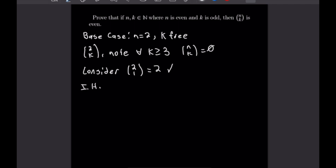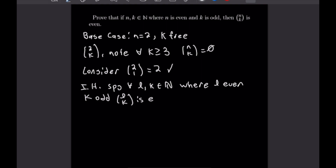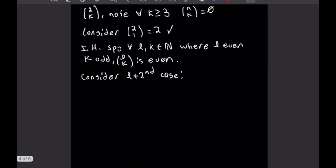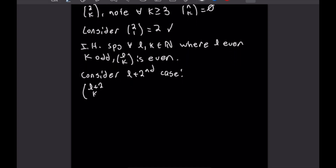Our induction hypothesis is: suppose that for all natural numbers l and k where l is even and k is odd, l choose k is even. Now we want to consider the next case. Since l is even we can't use l plus 1 because that would be odd, so we consider the l plus second case given by l plus 2 choose k.